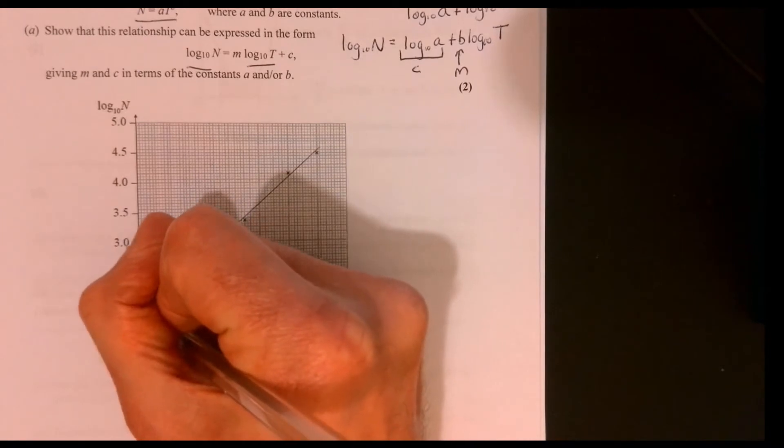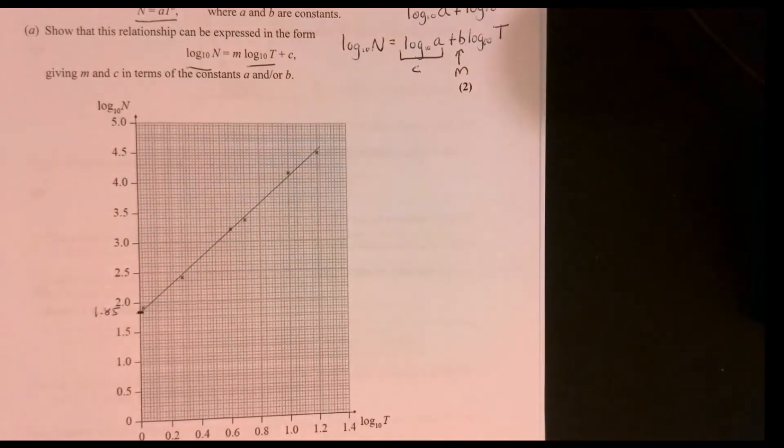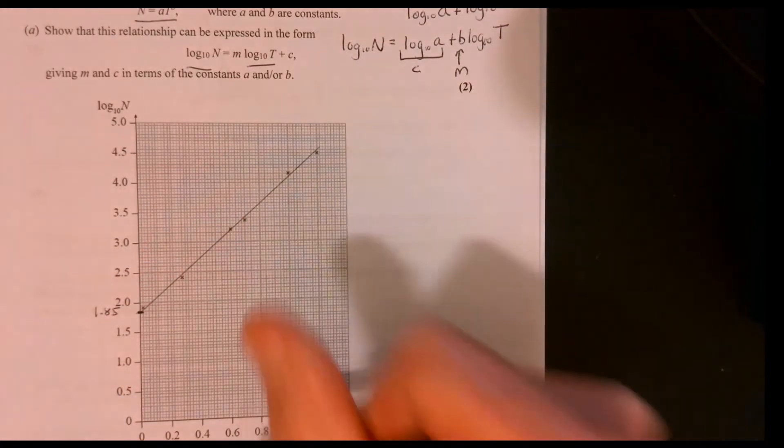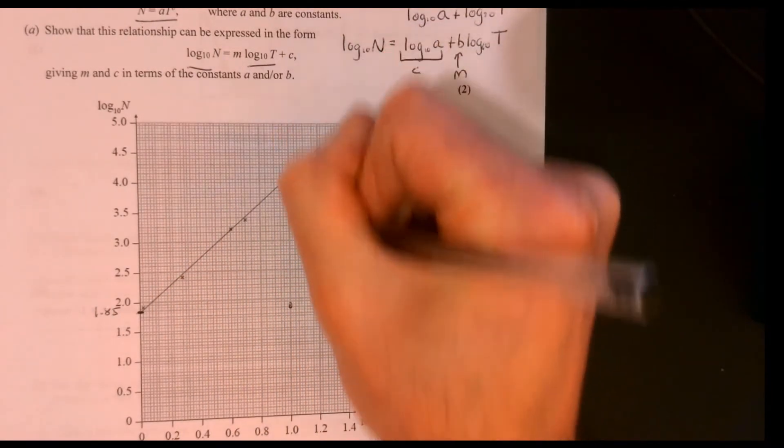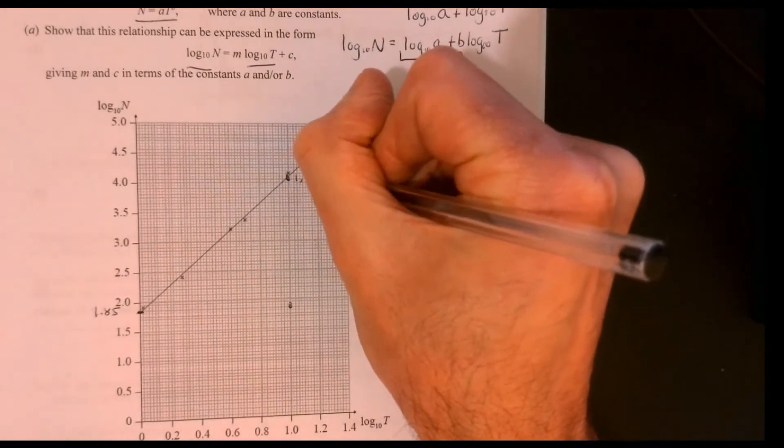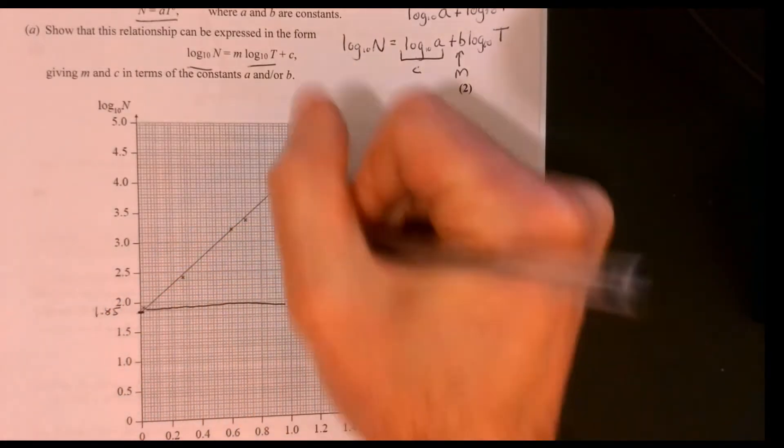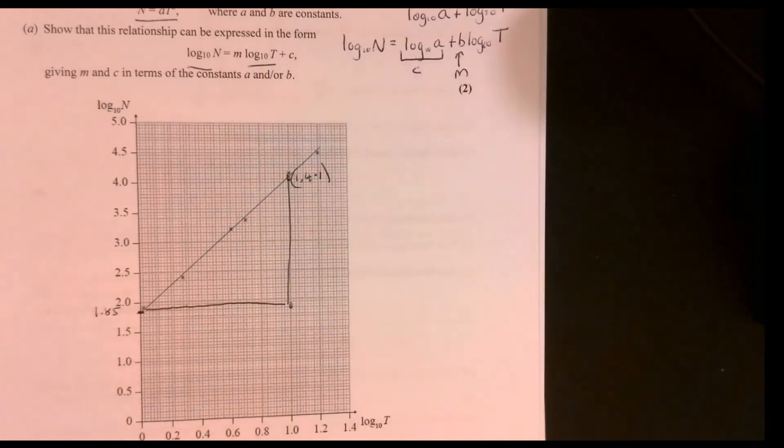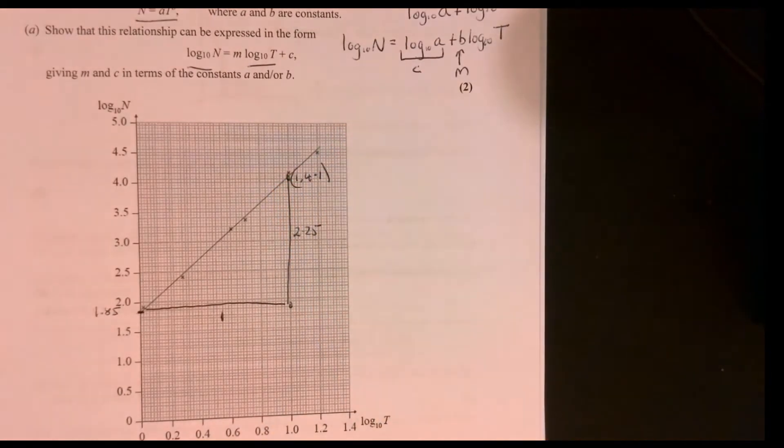We can see here. I'm going to take this value here to be, let's say, 1.85. I think the easiest thing to do is if I come across to 1 and read it up here. I'm taking this value up here to be 4.1. If I work out the gradient just here, that's 1 across and that's 2.25 going up. Therefore, we've got a gradient of 2.25.